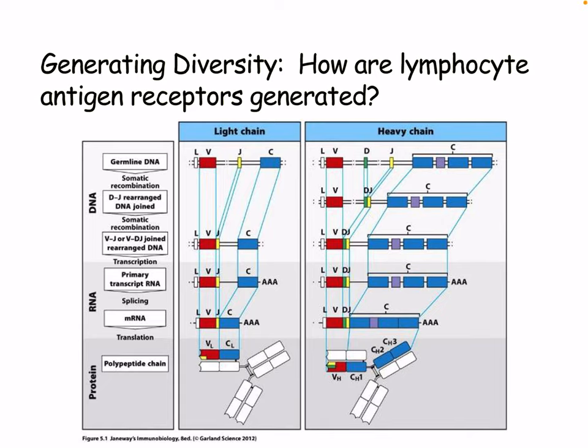Hello everyone, welcome to our next lecture. Today we're going to be looking at immunogenetics and how antigen receptors are generated. This lecture is probably one of the more complicated ones — it might be a little slow at times, but it's pretty important to understand. It is kind of the reason we have such effective adaptive immunity in the first place, allowing us to have responses to so many different things we encounter.